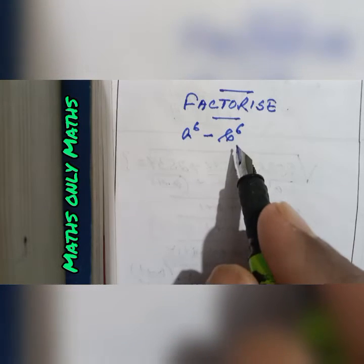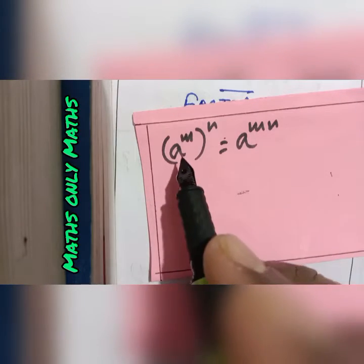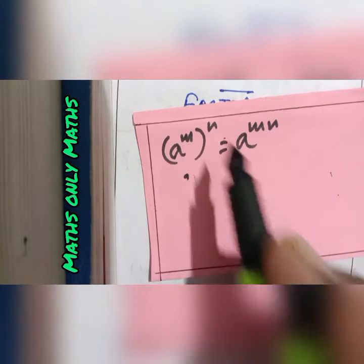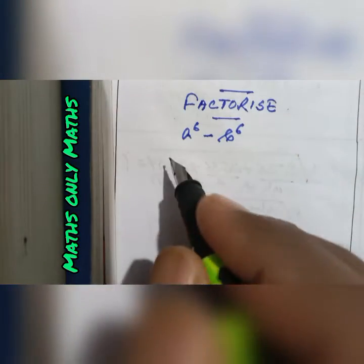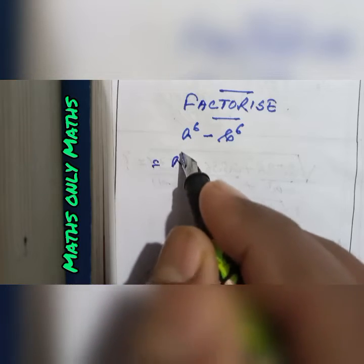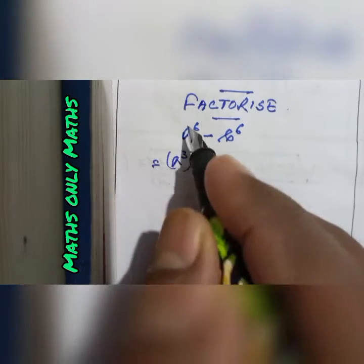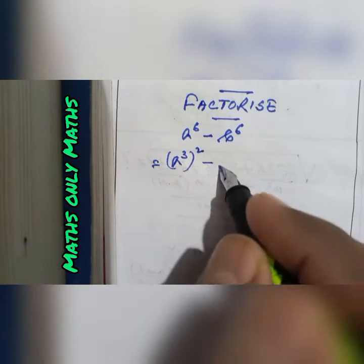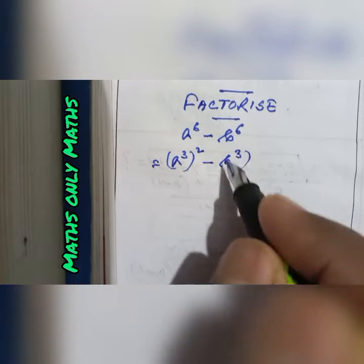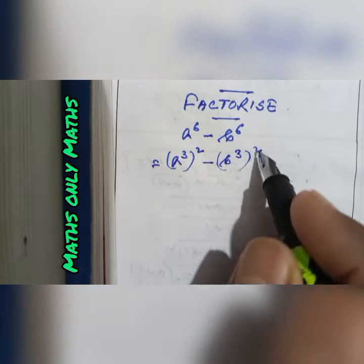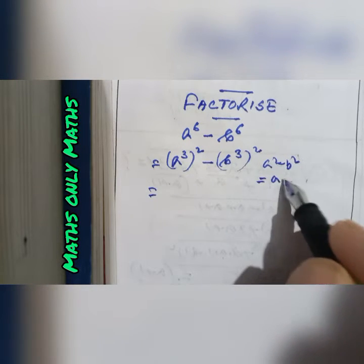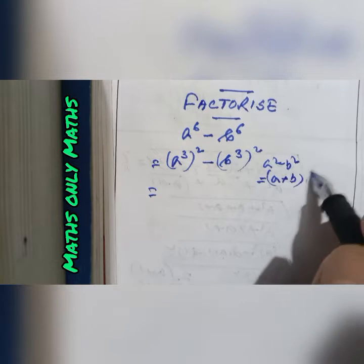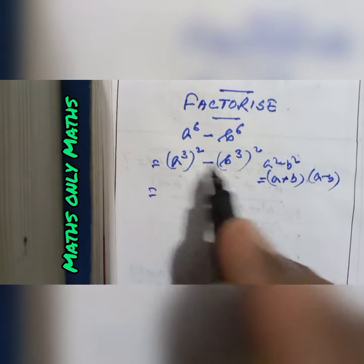Factorize a to the power 6 minus b to the power 6. According to the laws of indices, a to the power m whole to the power n is a to the power mn. So I can write a to the power 6 as a cube whole squared, giving (a³)² minus (b³)². Now, since a² minus b² equals (a + b)(a − b), I can write this as (a³ + b³)(a³ − b³).